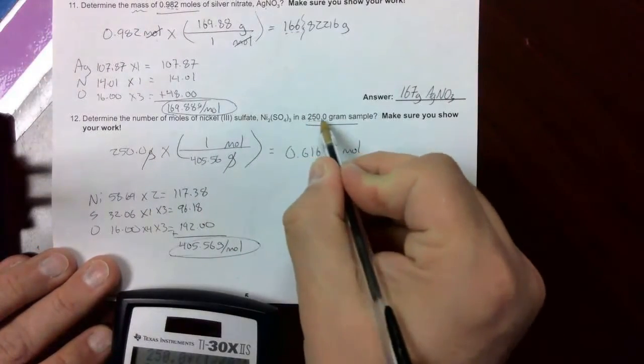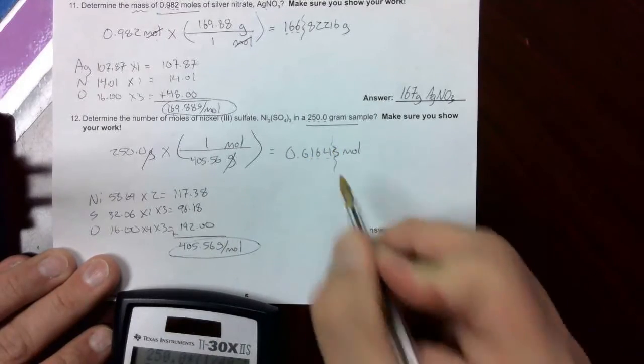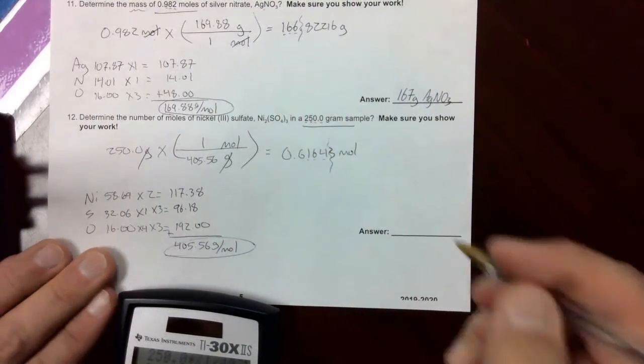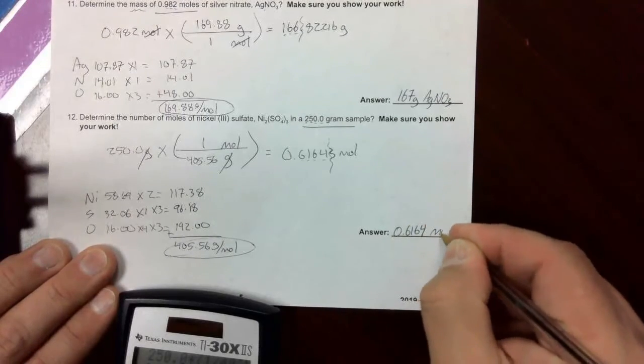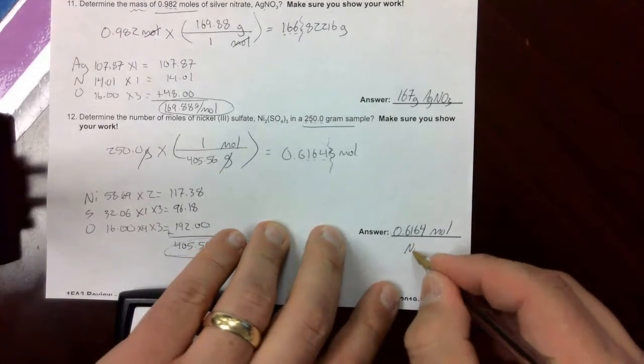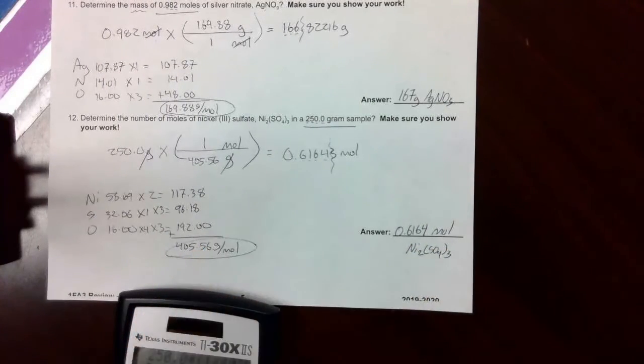We take a look at our number. 1, 2, 3, 4 sig figs. So we go to the 1, 2, 3, 4th digit. We're not going to round up because of that 3. So 0.6164 moles of Ni2SO4 subscript 3. All right.